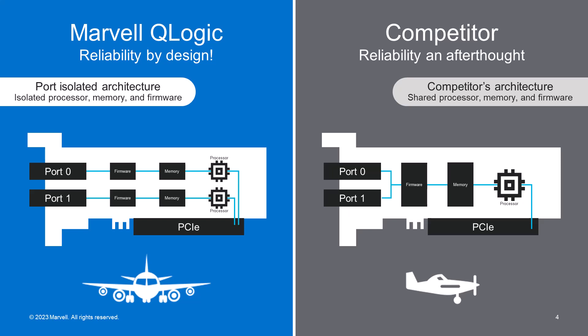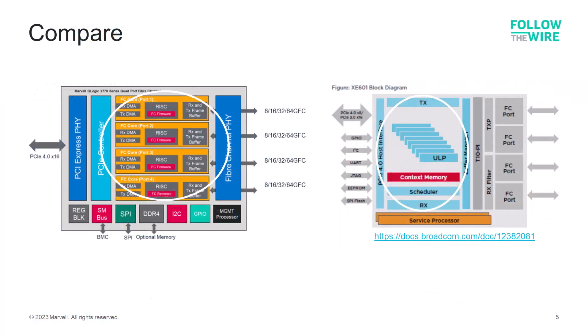So which approach is better? Well, let's take a look inside these architectures. On the left is the port isolated architecture of the Q-Logic HBAs. Each port has dedicated processor, memory, and firmware resources. Should an issue occur on one port, there's no impact to the other ports. This ensures predictable per-port performance for these HBAs, exactly what the enterprise application owners would expect.